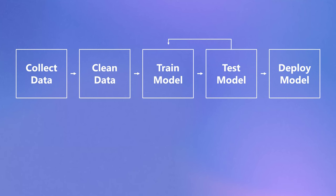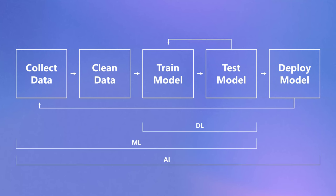Once the model reaches the required quality, you deploy it — like ChatGPT going out into the world. But that doesn't mean you're done. The model is still collecting data, and you repeat the whole cycle again. That is AI. The machine learning part covers data collection through testing. Deep learning is the neural networks — the math problem of training and learning.